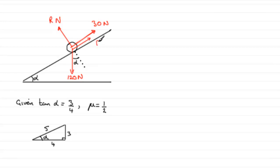Now it's in equilibrium — we're told that the particle is in equilibrium. So therefore the component down the plane must equal the component up the plane.